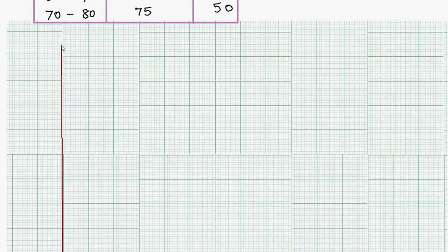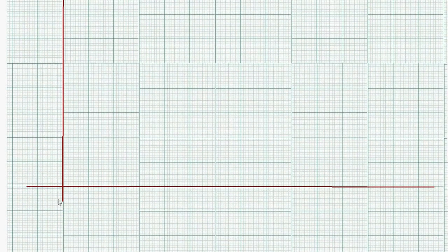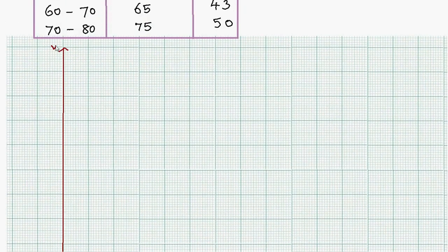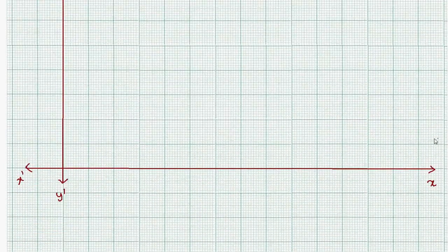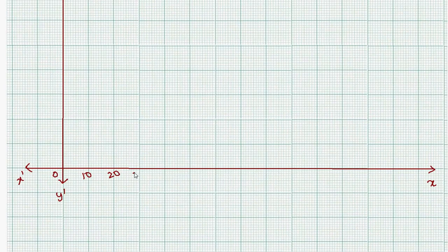On the x-axis, we mark the values starting from zero: 10, 20, 30, 40, 50, 60, 70, 80, 90, 100. These represent the age values along the horizontal axis.